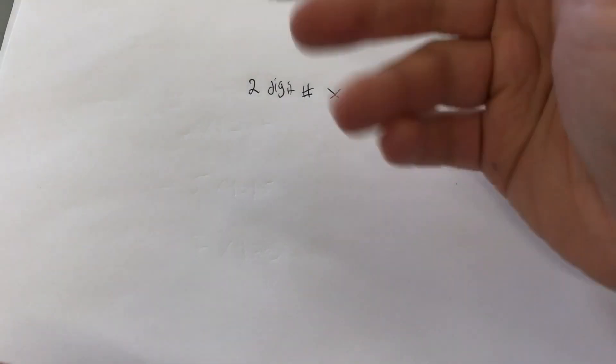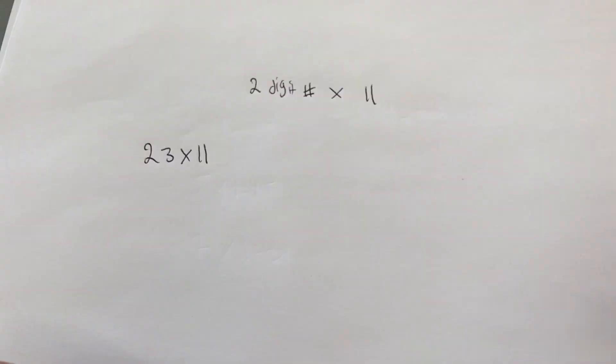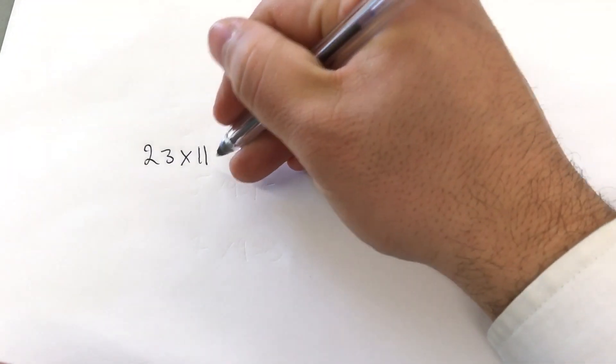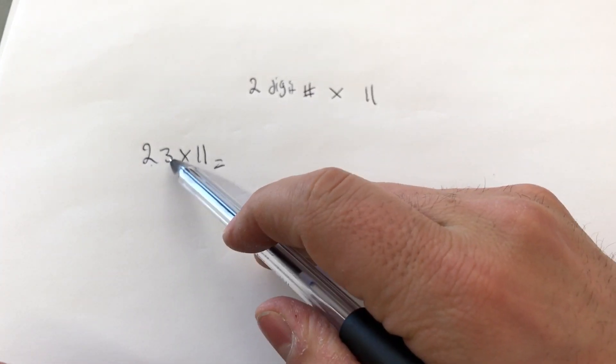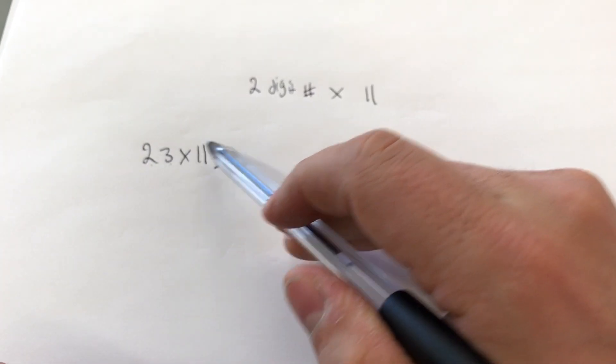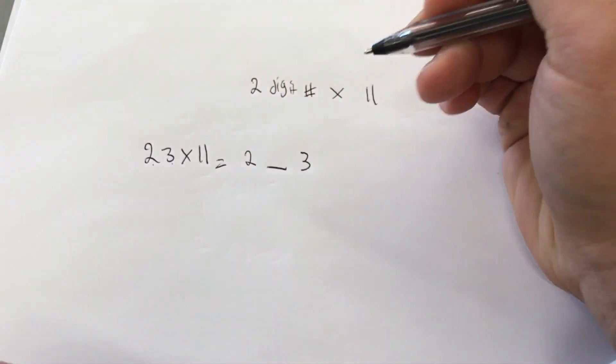So let's just say for the sake of argument that we have a number like 23 times 11. This is how you multiply any two-digit number by 11. You're going to take the 2 and the 3 and what you're going to do is you're going to leave a space in between them. So 2 space 3.